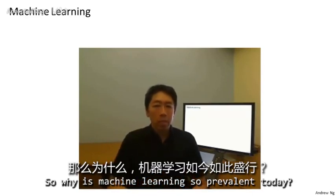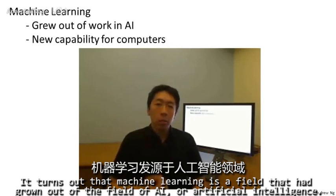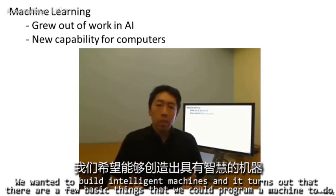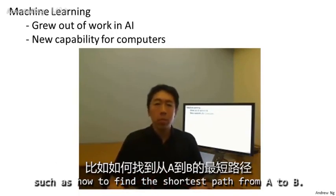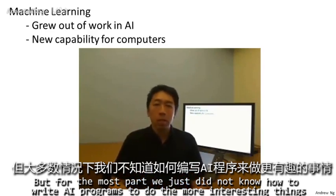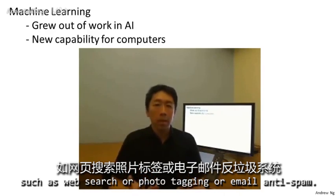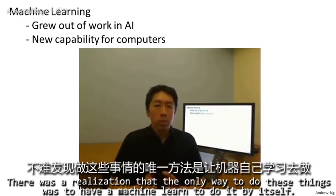Why is machine learning so prevalent today? It turns out that machine learning is a field that had grown out of the field of AI, or artificial intelligence. We wanted to build intelligent machines, and it turns out that there are a few basic things that we could program a machine to do, such as how to find the shortest path from A to B. But for the most part, we just did not know how to write AI programs to do the more interesting things, such as web search, photo tagging, or email anti-spam. There was a realization that the only way to do these things was to have a machine learn to do it by itself.